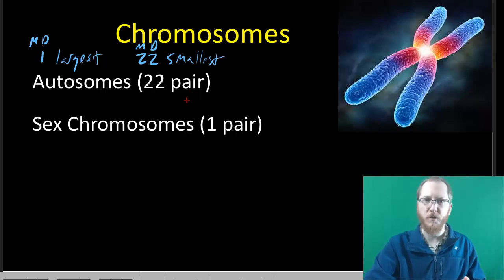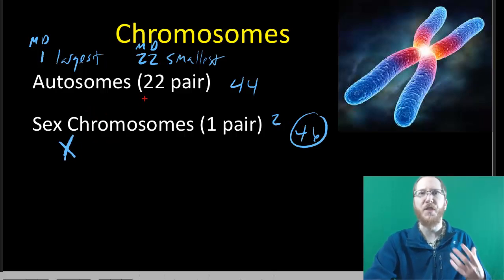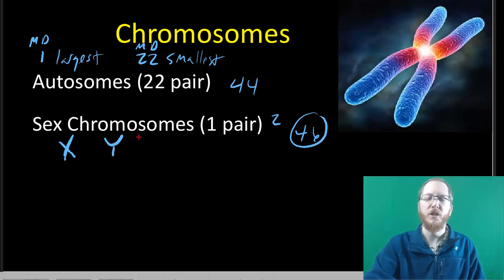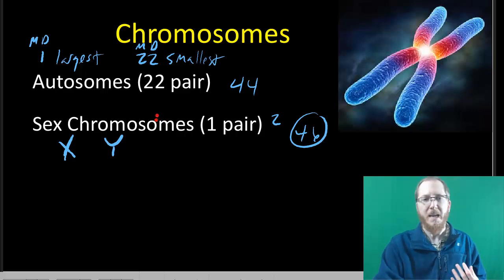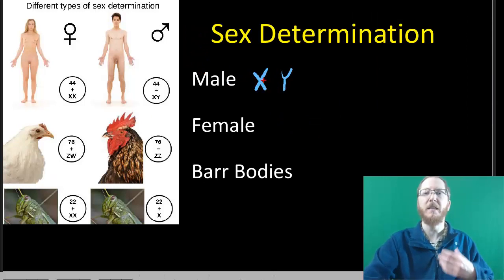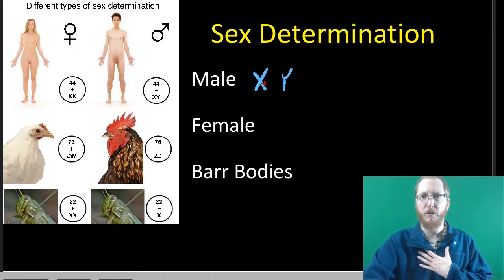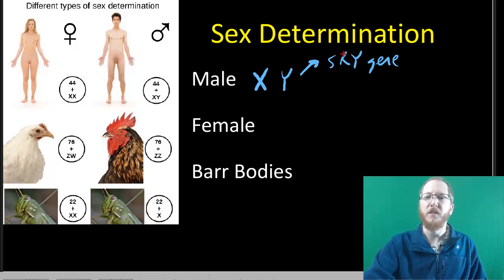Beyond autosomes, we have sex chromosomes, which make up the other two chromosomes to reach the human total of 46. We have the X chromosome, which is large and contains a couple thousand genes, and the Y chromosome, which is very small and contains about 100 genes — really just what's needed to make you male. If you're male, you have an X and a Y. The Y chromosome contains the SRY gene, which causes you to develop into a male in the womb.